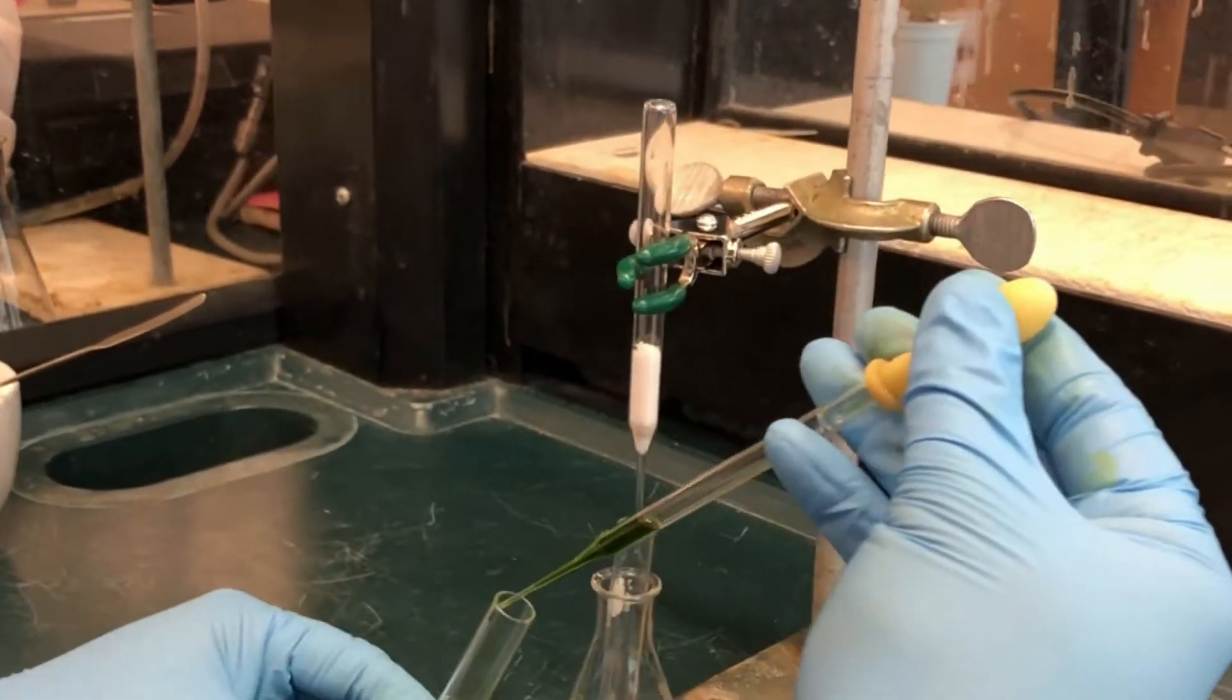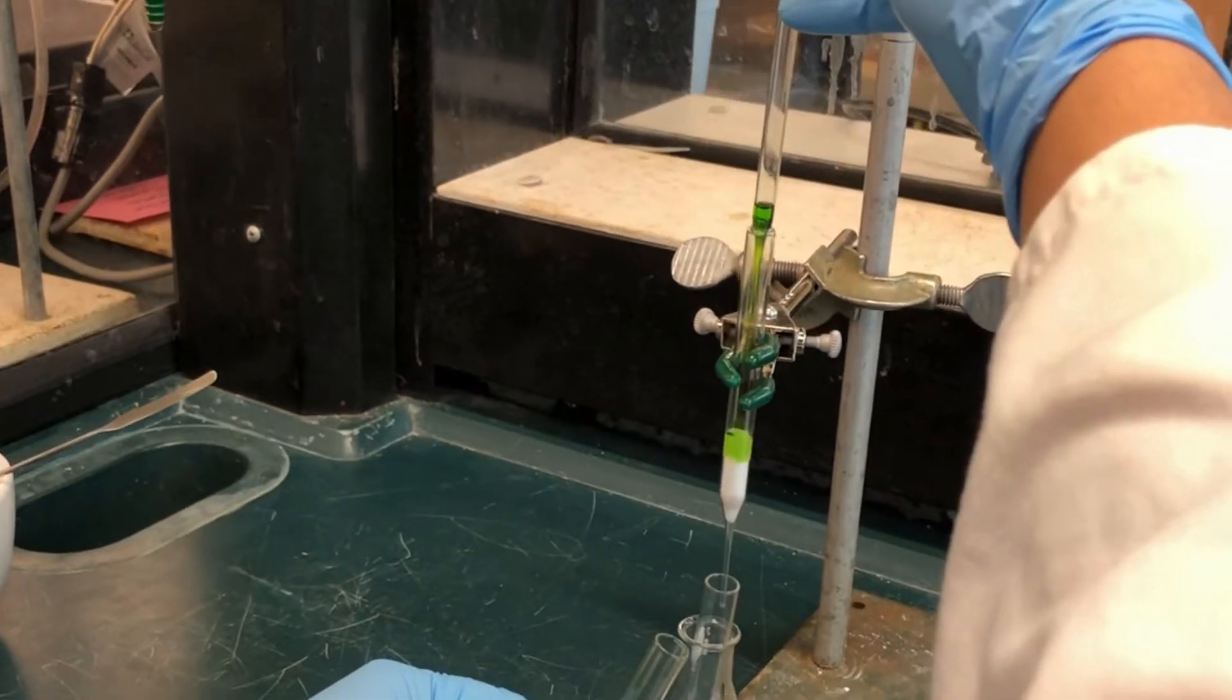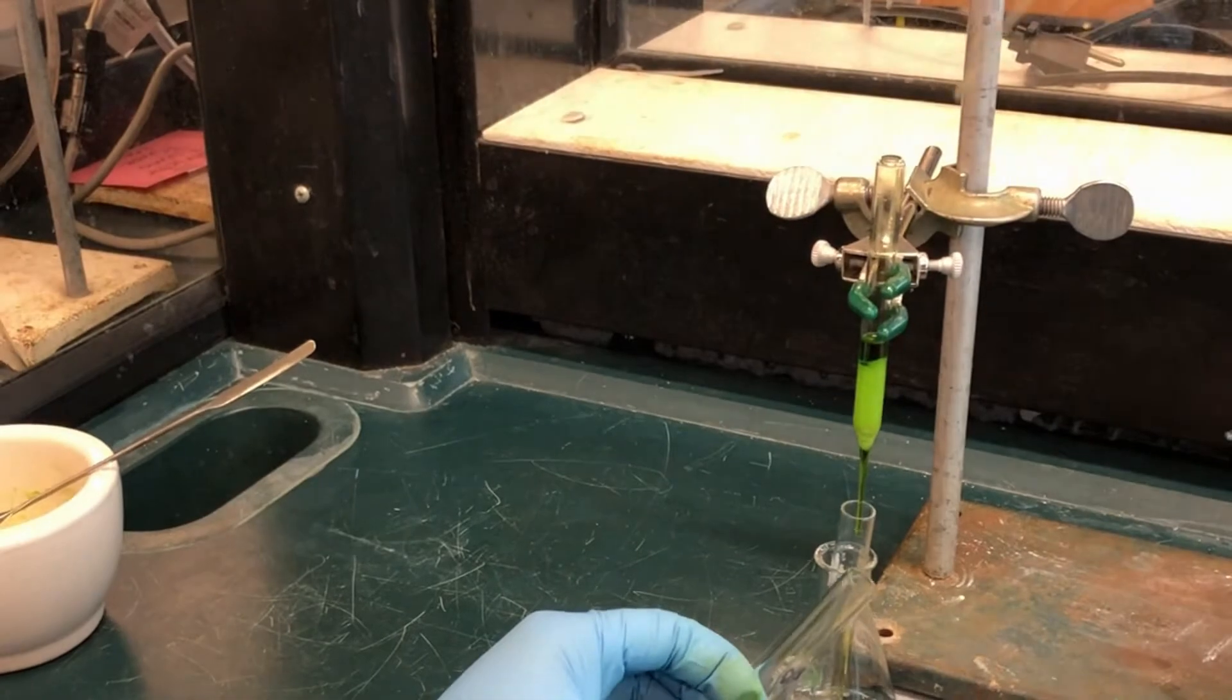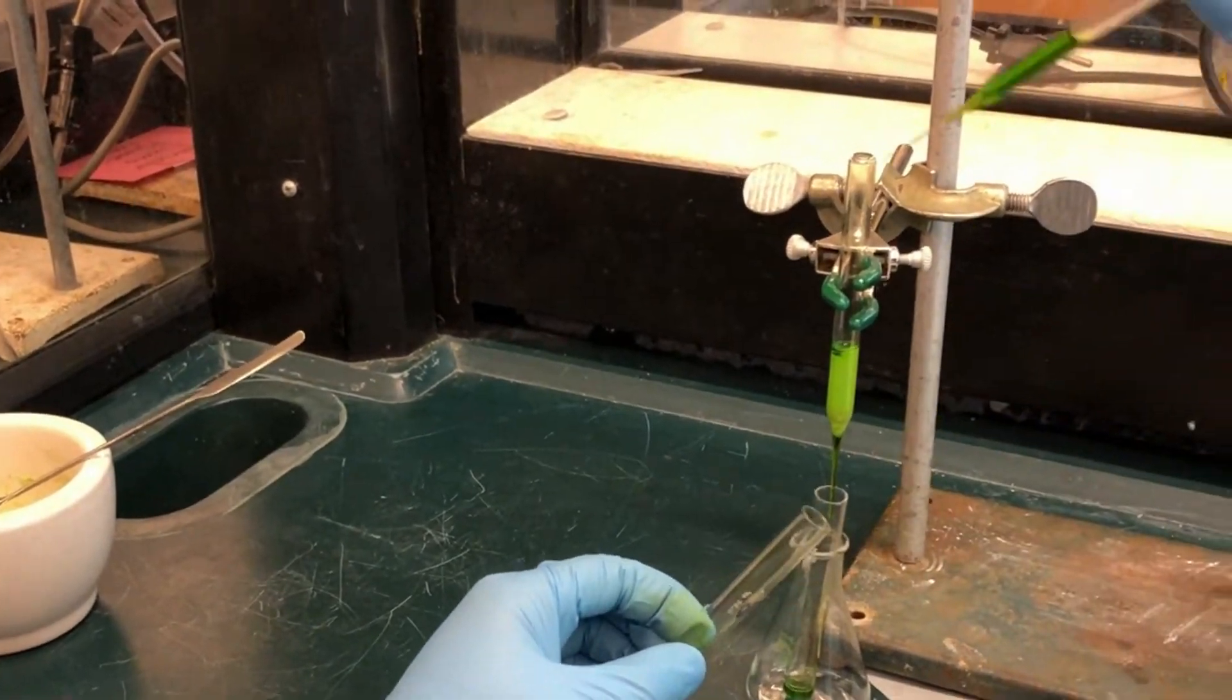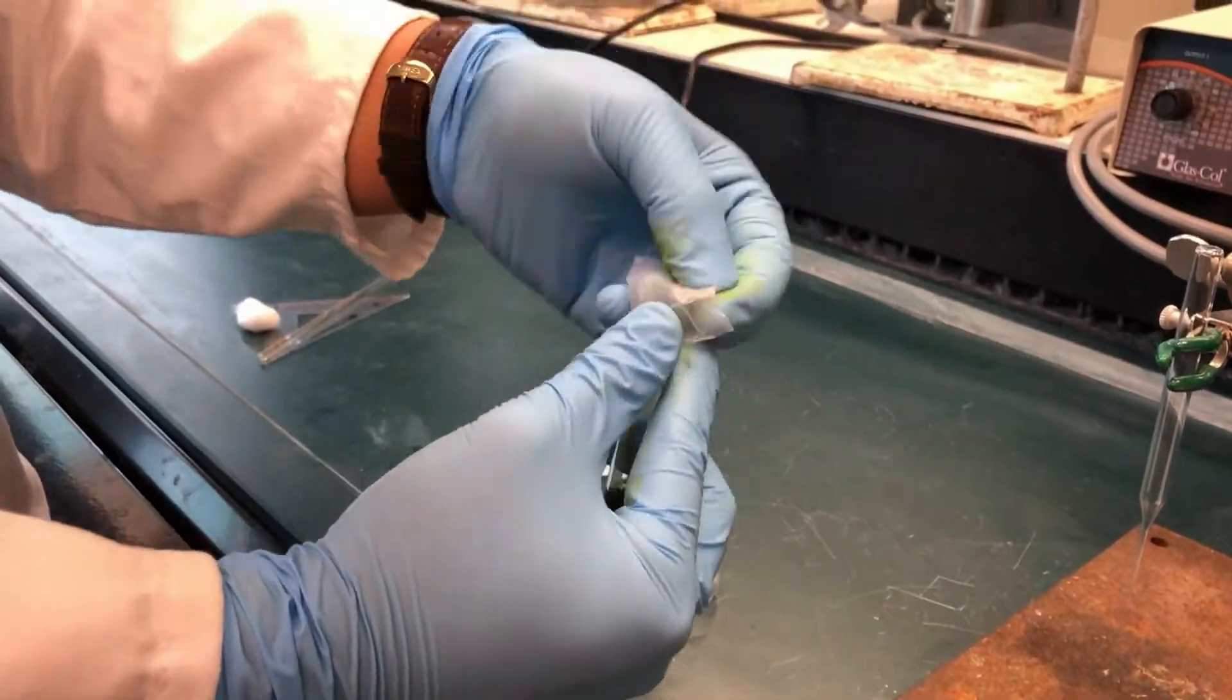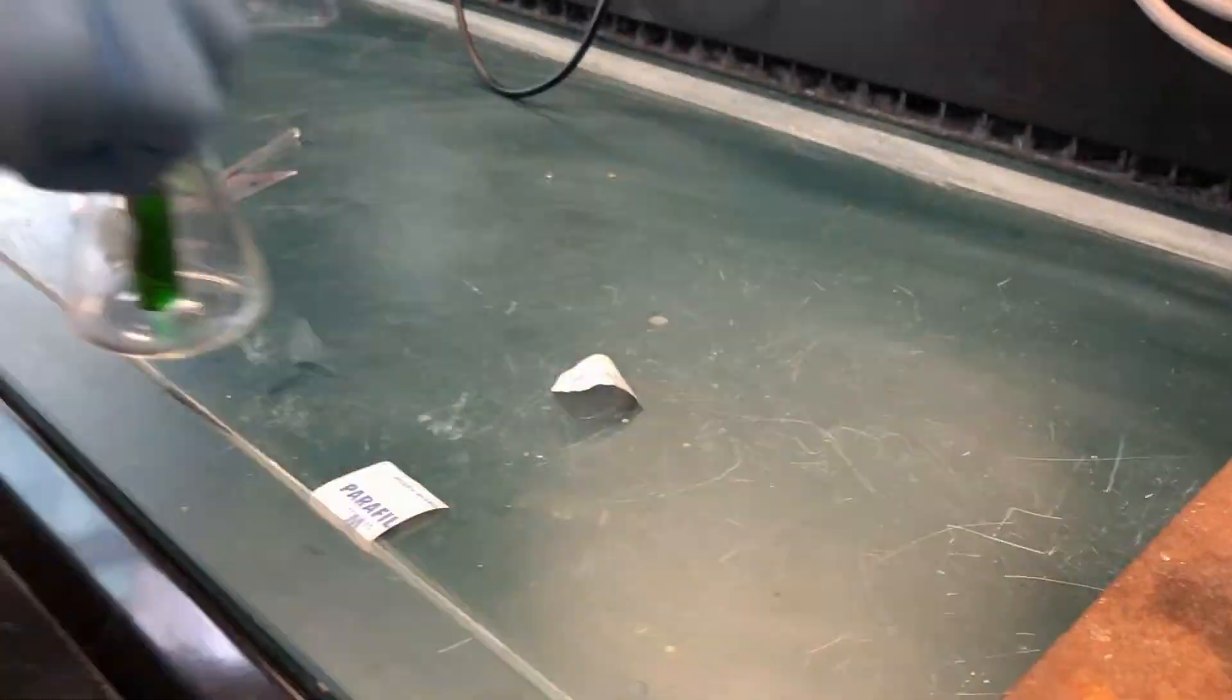Put a small test tube under the drying column. Carefully pipette the green petroleum ether layer into the top of the drying column and let it run through the sodium sulfate into the collection tube. Cover the collection tube with parafilm and leave it in your drawer over the weekend to dry.